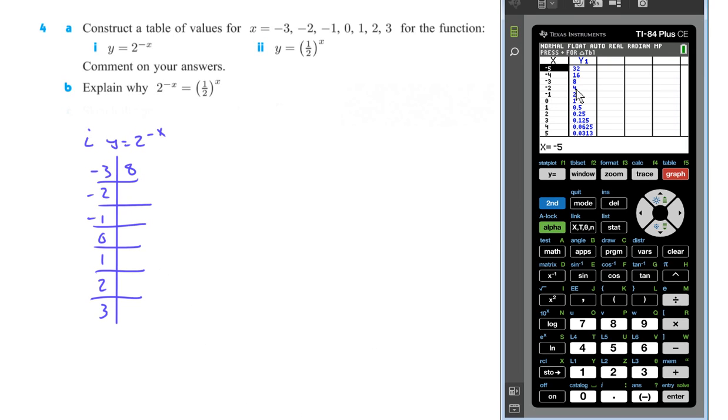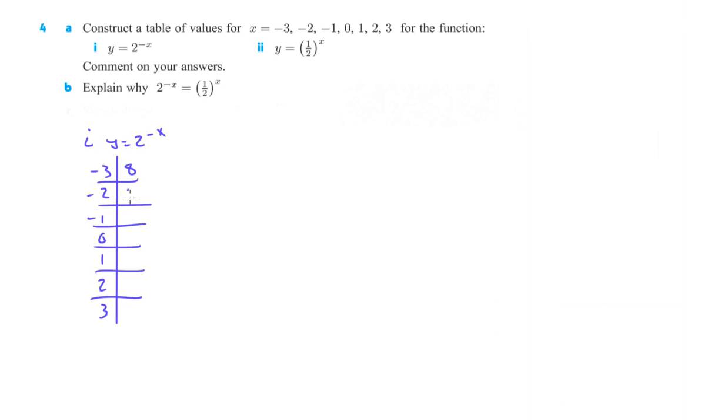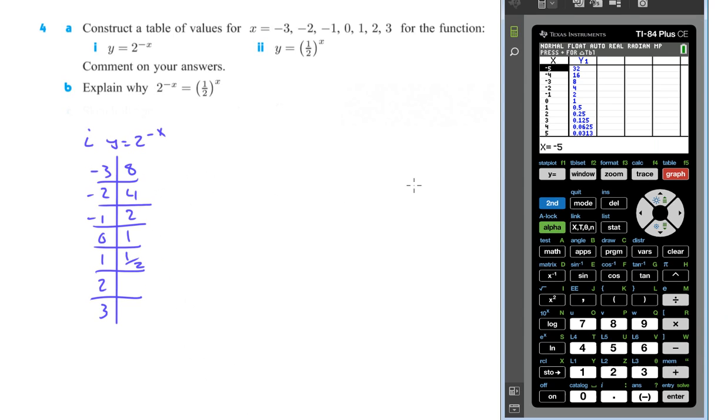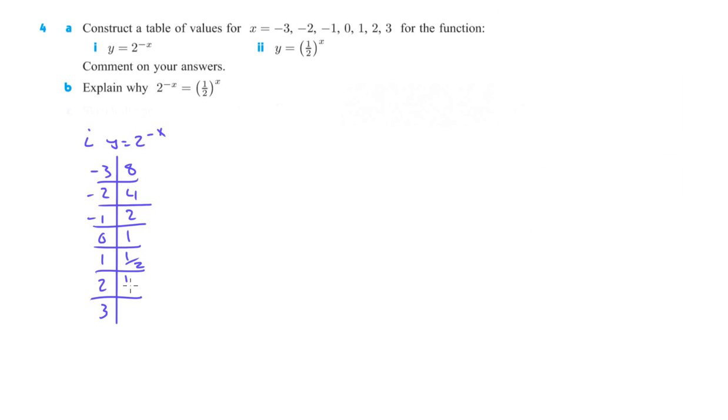And then we got 4, 2, 1, and point 5. Four, 2, 1, 0.5 or one half. That will help us understand some stuff here in a little bit. Point 25, which is a quarter. And point 125, which is an eighth. That's for i.